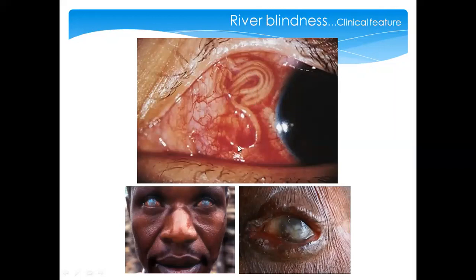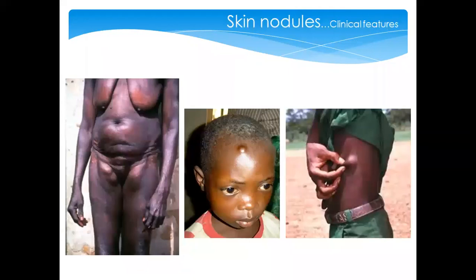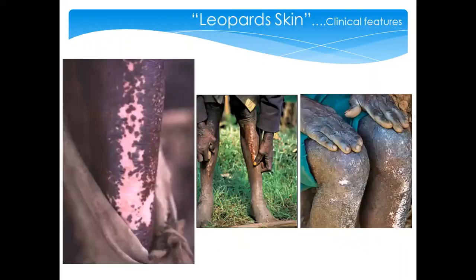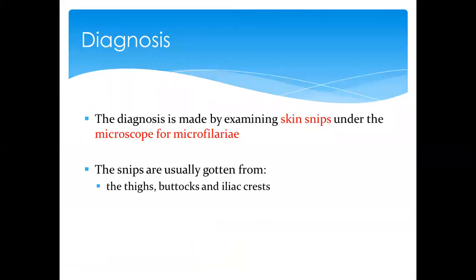Here you can see a worm that has penetrated into the eye and the ultimate effects: corneal ulceration, pannus formation, and a thickness that impairs vision. Surgeries are normally performed on the eye to remove those worms. You can also see skin nodules here — formed on different parts of the body by overcrowding of adult worms. This shows the itchiness and the resulting leopard skin from excessive scratching.